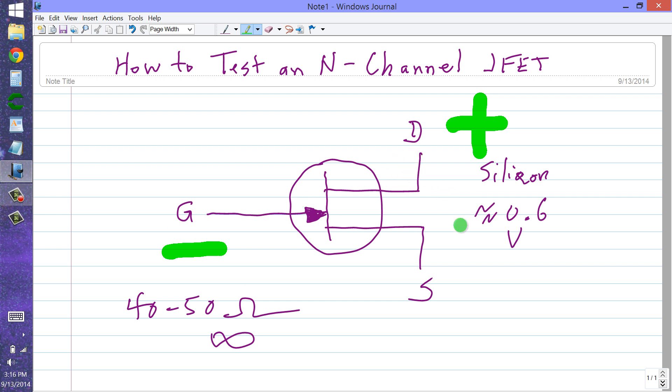Now, an interesting thing happens between the drain and the source. Because this is a channel, it is a continuous more or less strip of n-type semiconductor material. So, it will conduct in either direction. You will get conduction with the negative at the source and the positive at the drain. And you will get conduction with the negative at the drain and the positive at the source. So, those are the results that you should expect when you test an n-channel junction field effect transistor.